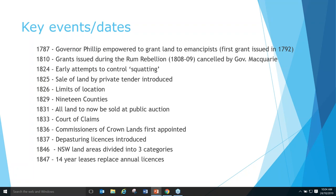By 1847 they'd replaced annual licences for holding land with 14-year leases. You get this tightening up of regulation as time goes on — they stopped giving land away, started to sell it, and things became more familiar with how we know land today.